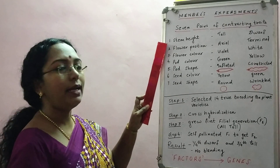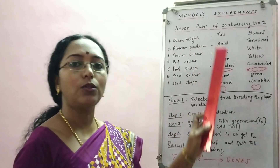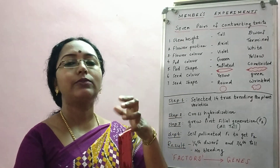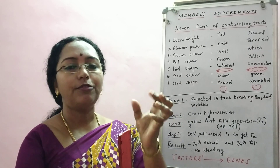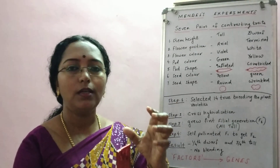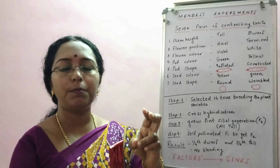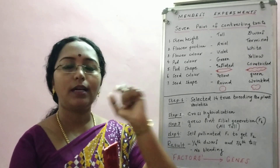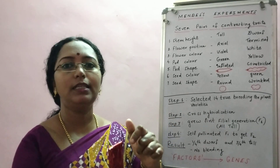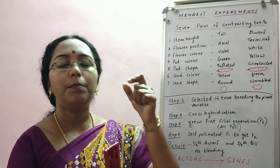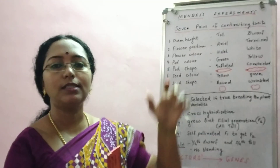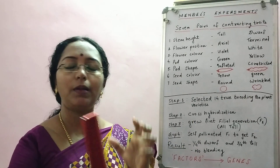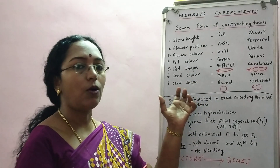Here is an easy way to remember all seven characters. Start with the plant: first character is height — tall or dwarf. On the plant you have flowers, so next is flower position — axial or terminal — and flower color — violet or white. The flower transforms into a fruit, which here is the pod. So next are pod color — green or yellow — and pod shape — inflated or constricted. Inside the pod are seeds, giving two more characters: seed shape and seed color. You don't need to memorize — just imagine a plant and it will come to mind.